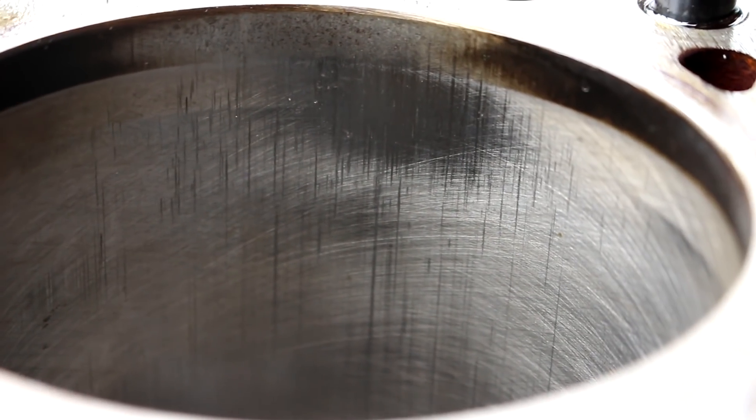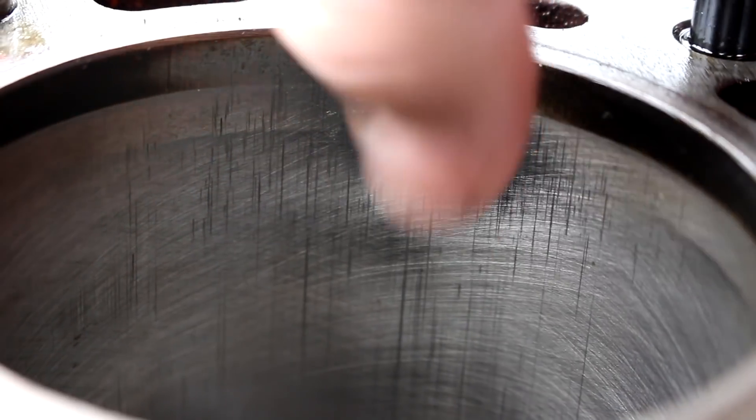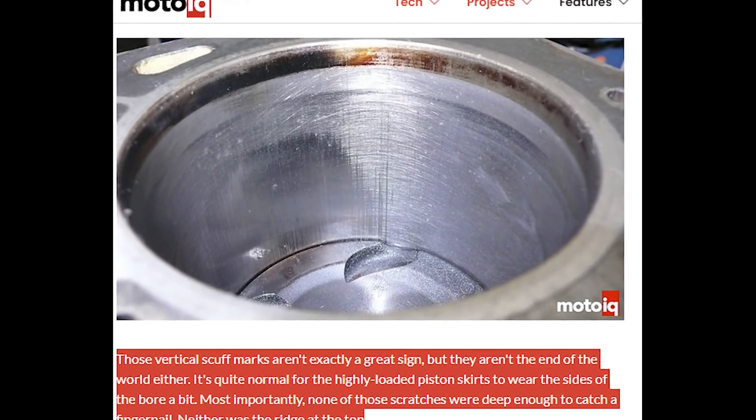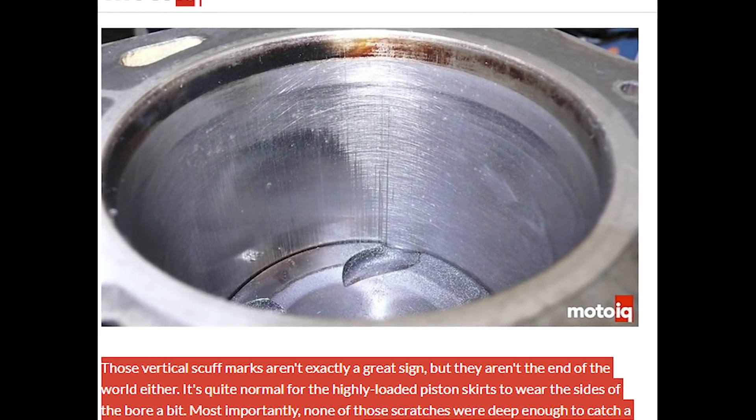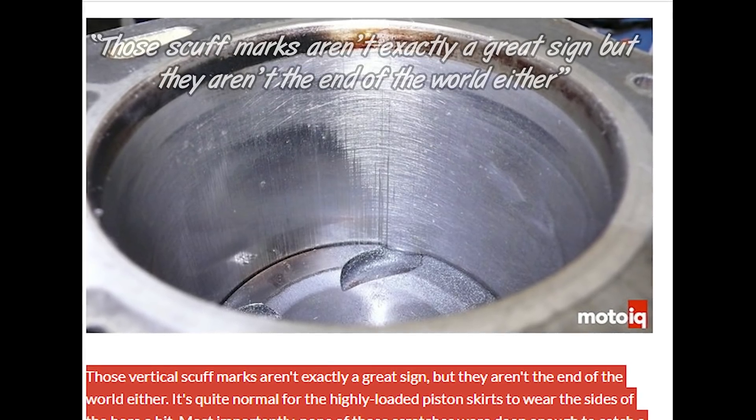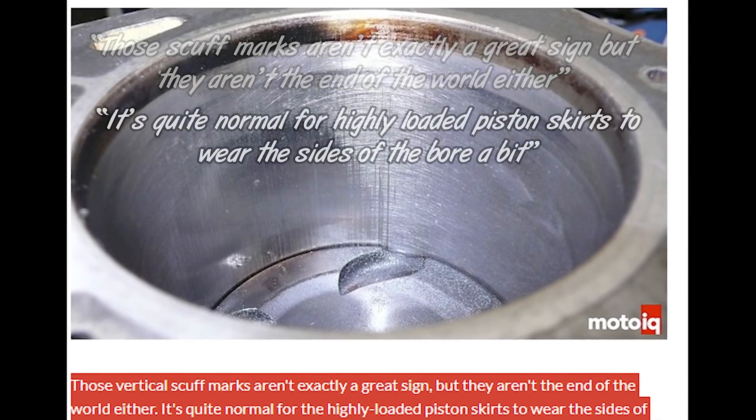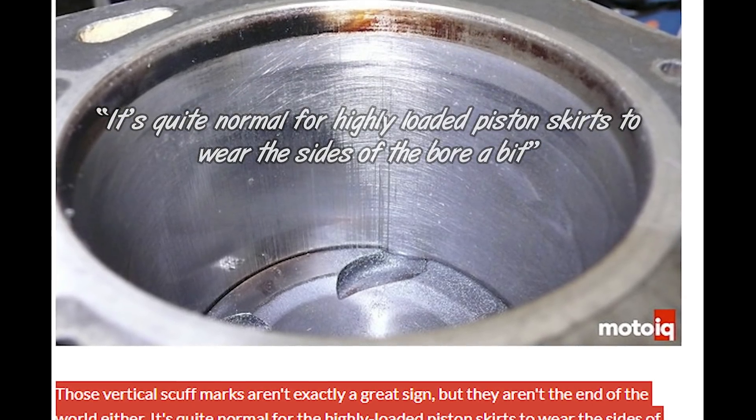Now, obviously, this doesn't look too healthy, but is it a normal amount of wear? I have no idea. So I hopped on good old Google and I landed on a site that I trust very much. That is MotoIQ and they have a Miata engine torn apart here and you can see the identical looking wear on this cylinder wall. And exactly what they say is those vertical scuff marks aren't exactly a great sign, but they aren't the end of the world either.